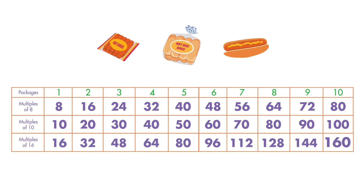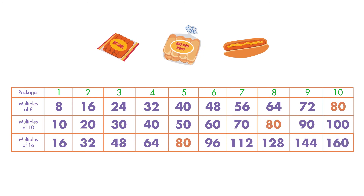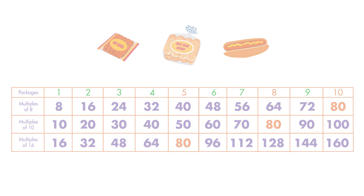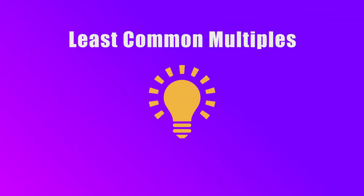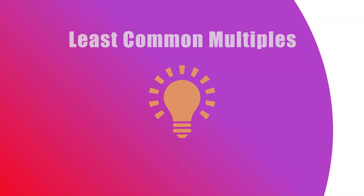The least common multiple is now 80. We need 10 packs of buns, 8 packs of hot dogs, and 5 boxes of ketchup packets to make 80 hot dogs. And that's how you find the least common multiple. See you next time!